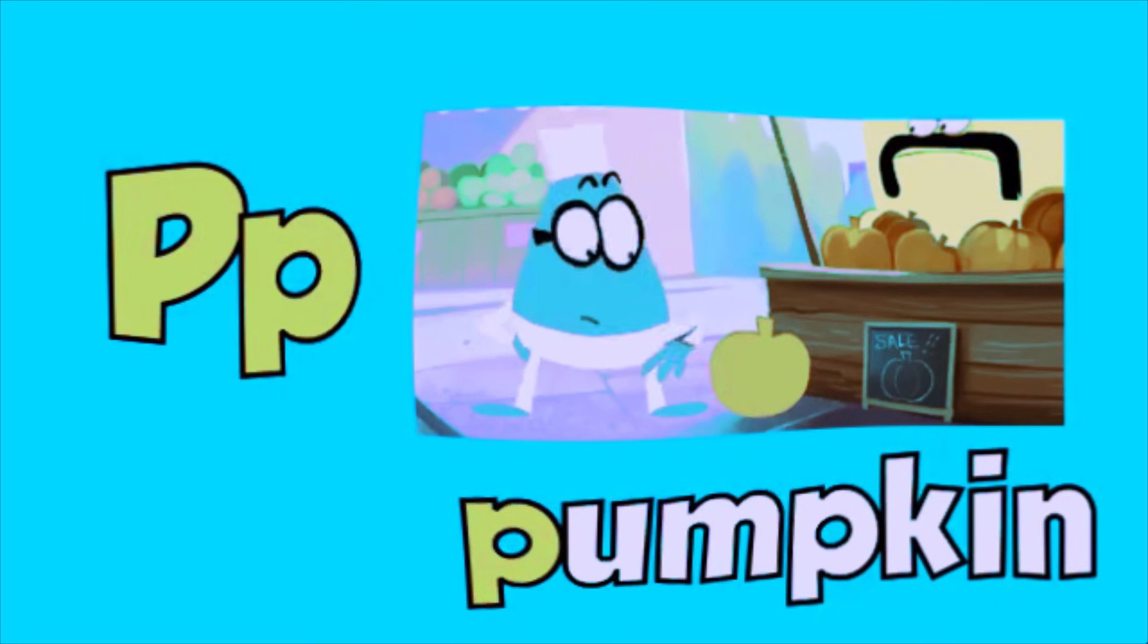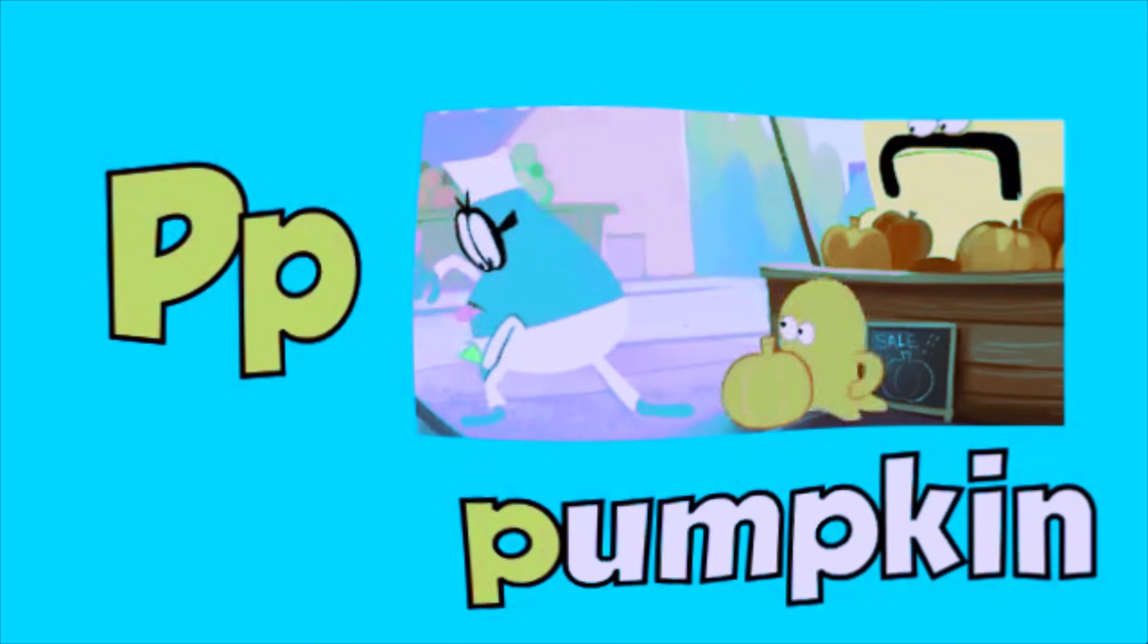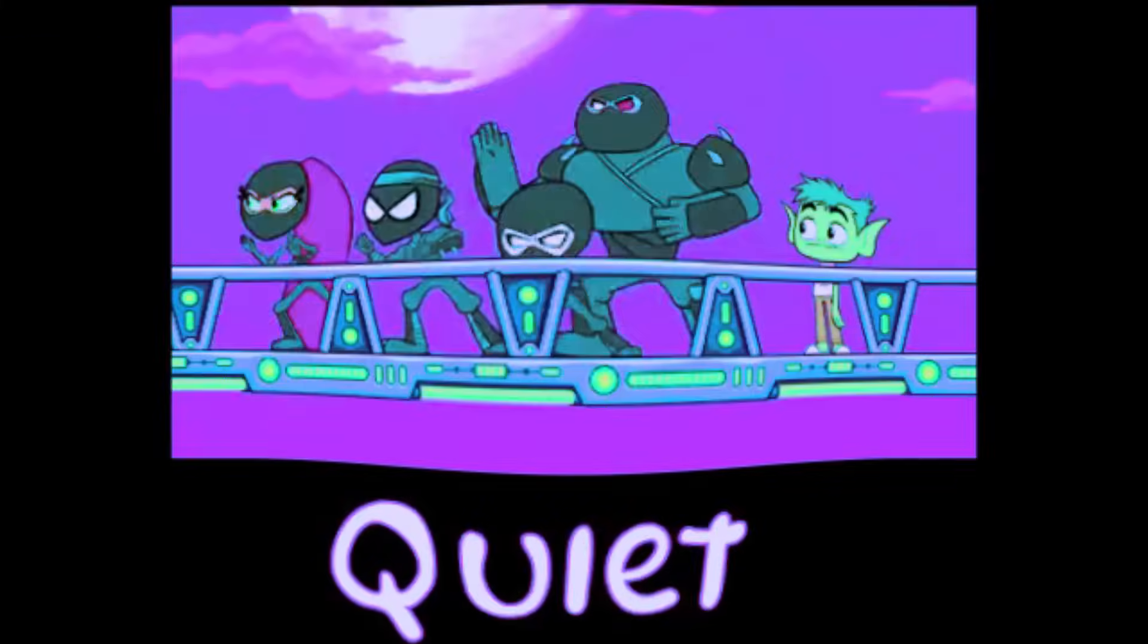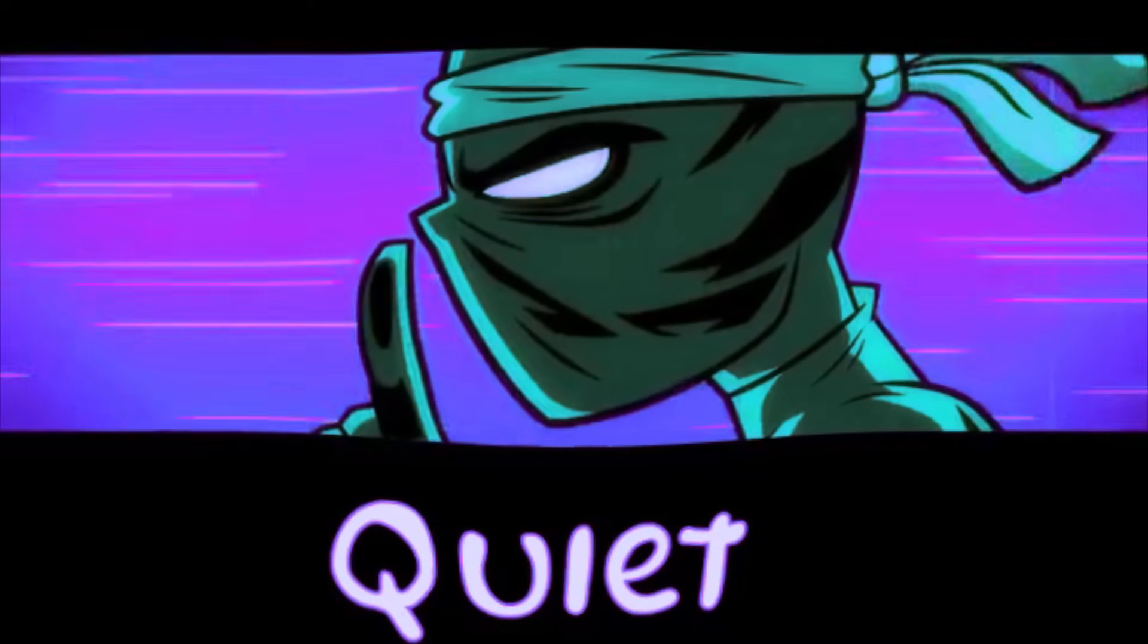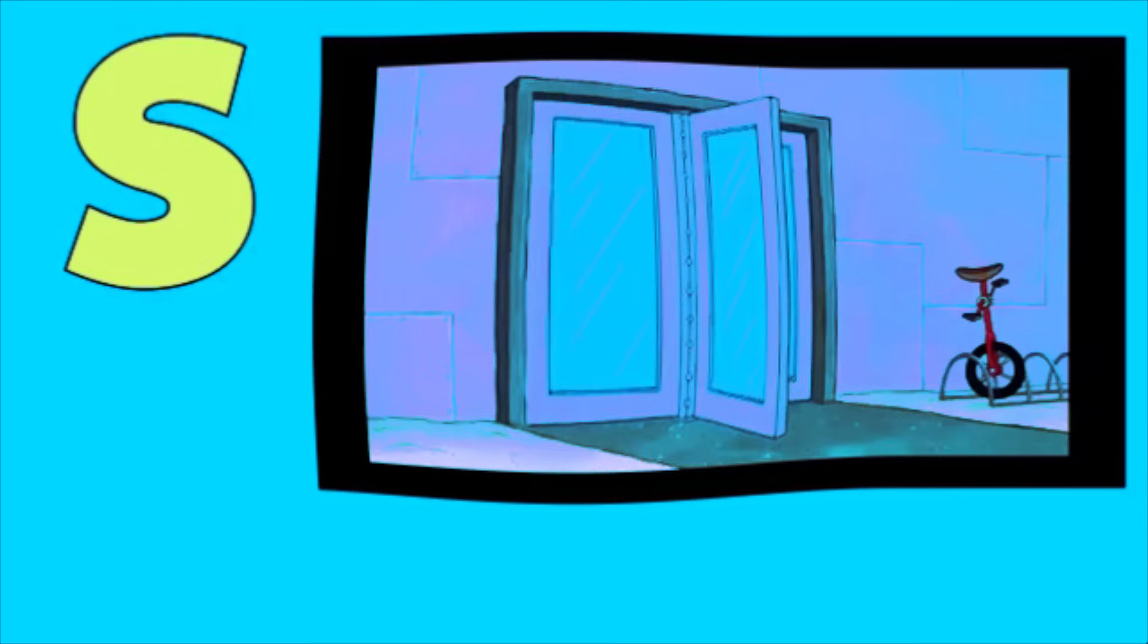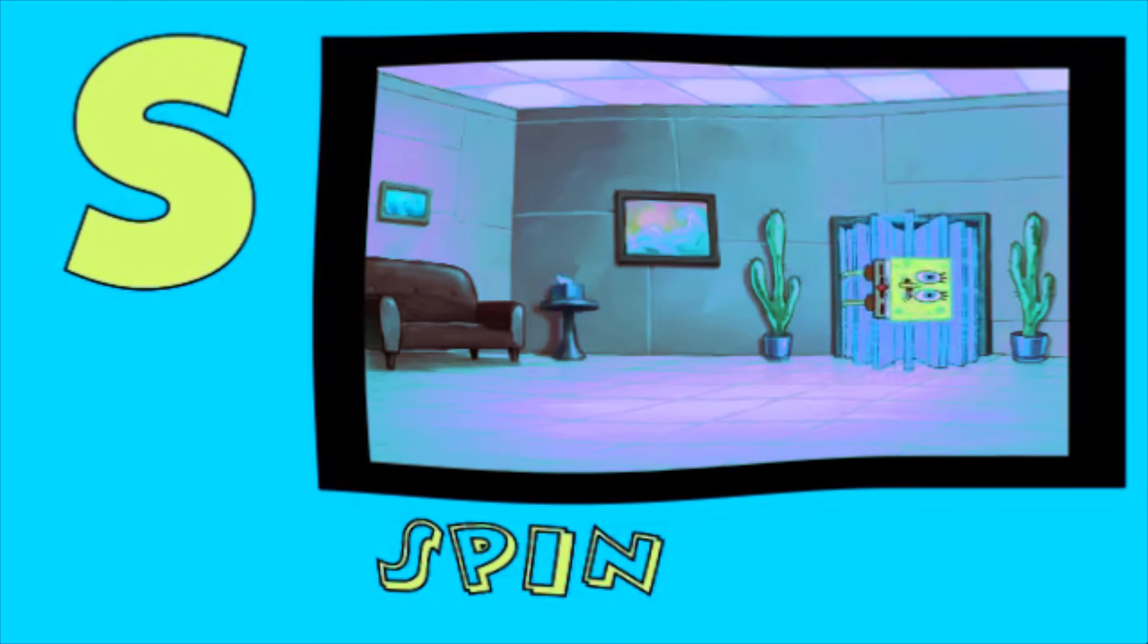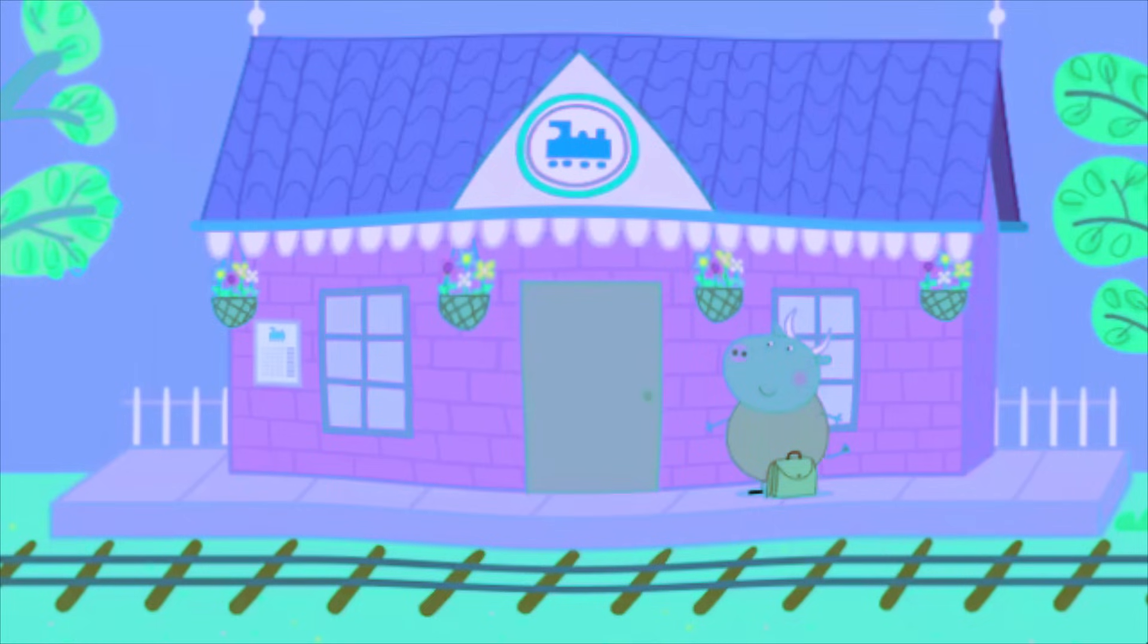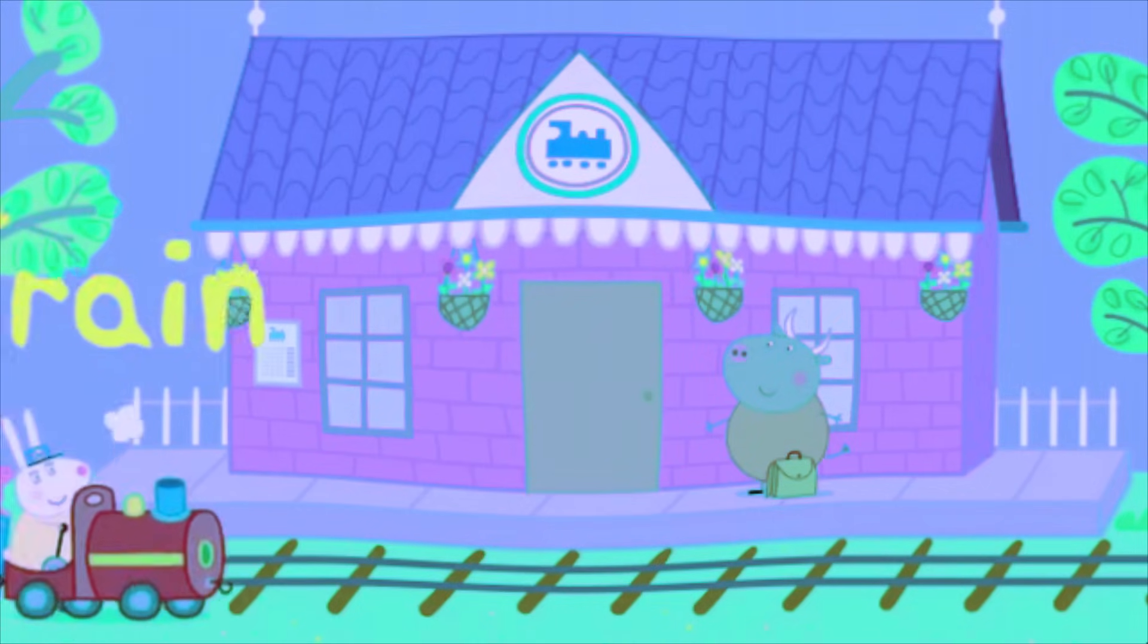P is for Pumpkin, p, pumpkin. Q is for Quiet, qu, quiet. R is for Run, r, run. S is for Spin, s, spin. T is for Train, t, train.